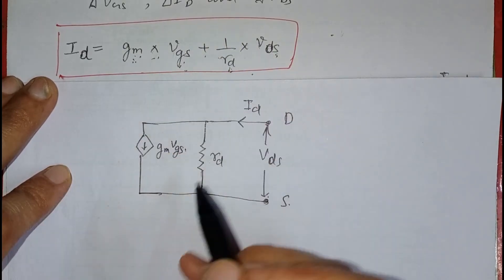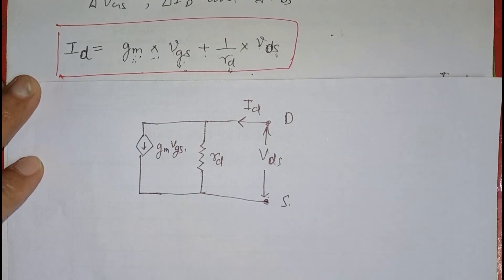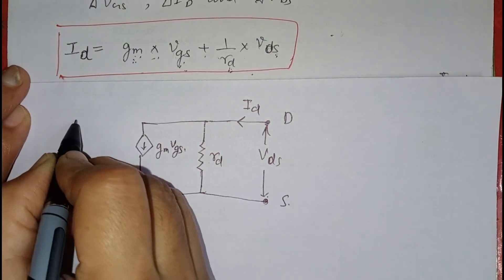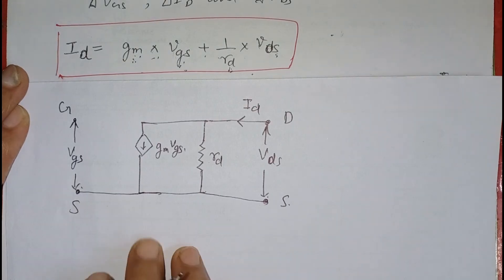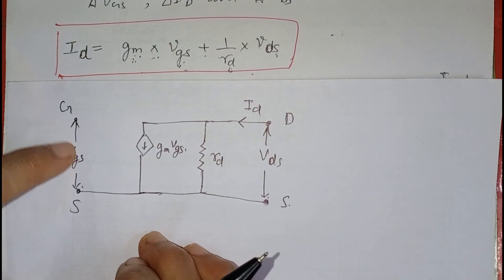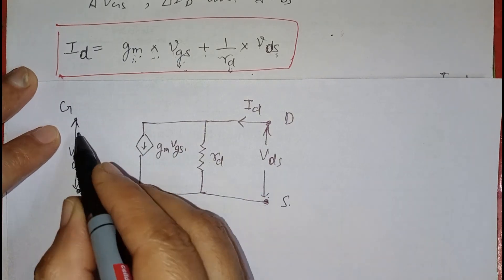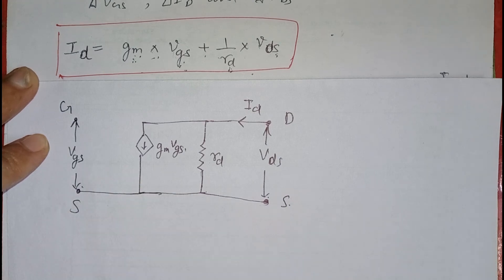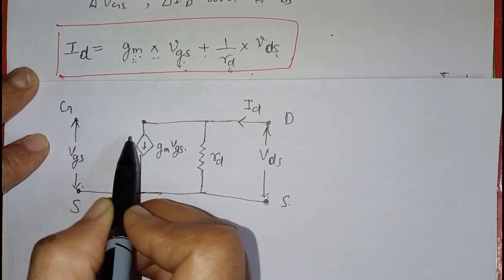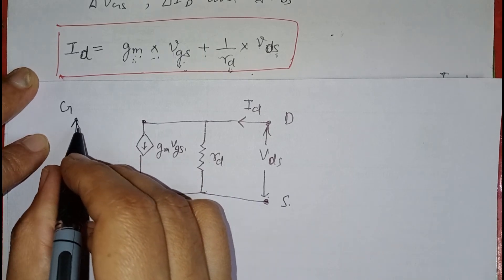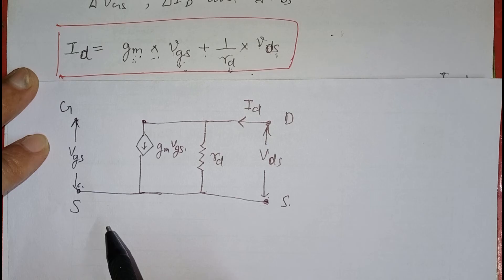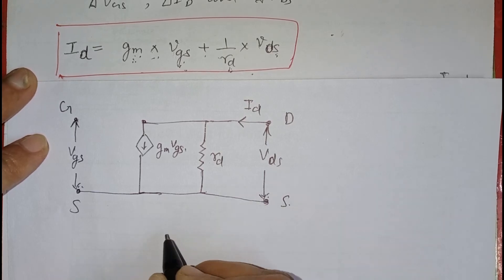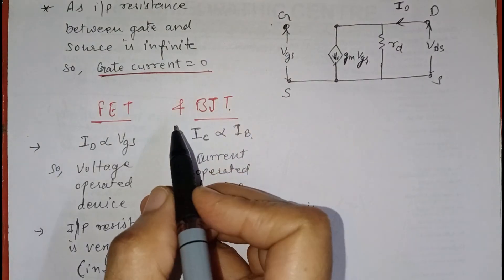This circuit satisfies our equation. We extend the source terminal and place the gate terminal there, with voltage vgs across the gate and source terminal. The gate-to-source path is open-circuited because the gate terminal is reverse-biased, creating an infinitely high resistance between gate and source. Similarly, gate to drain is also open-circuited due to the high resistance from reverse biasing. So these two terminals are open-circuited, giving us the final low-frequency small signal model of the FET.